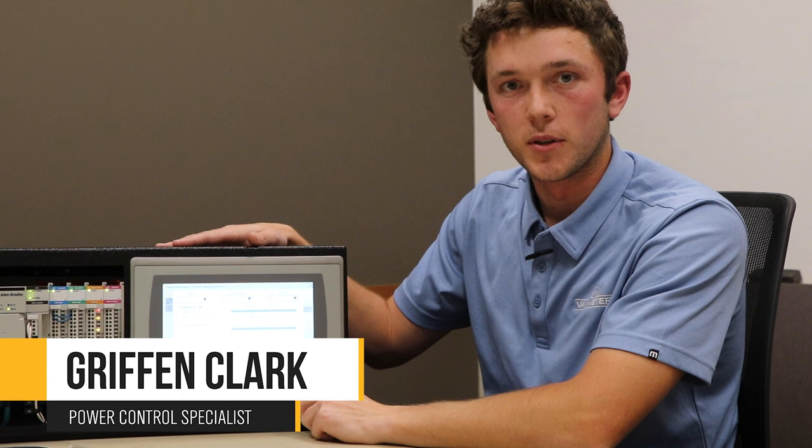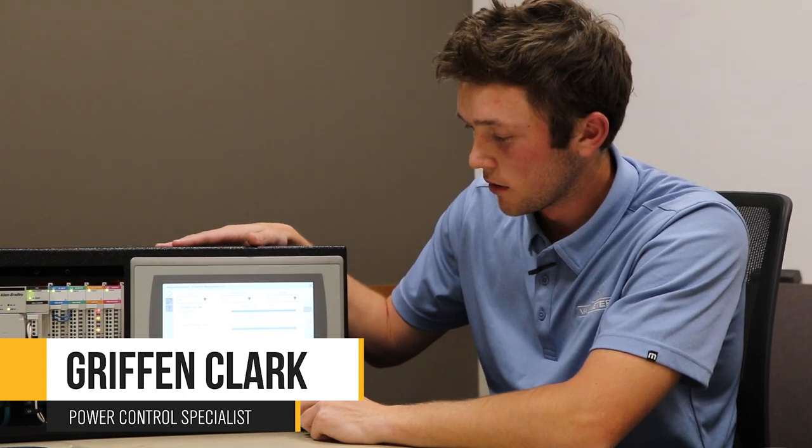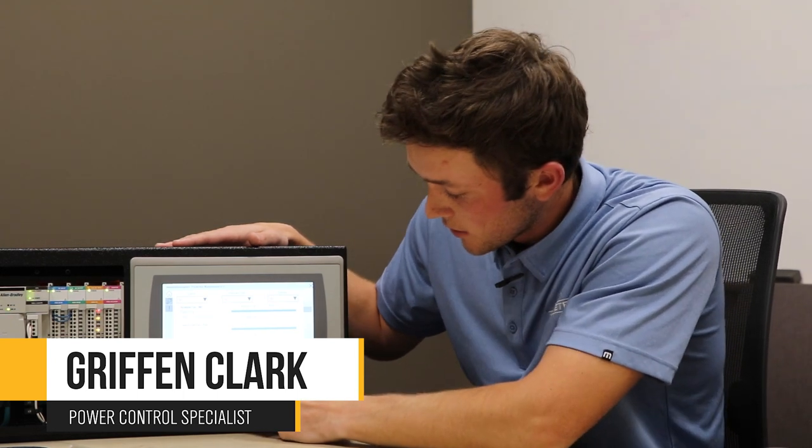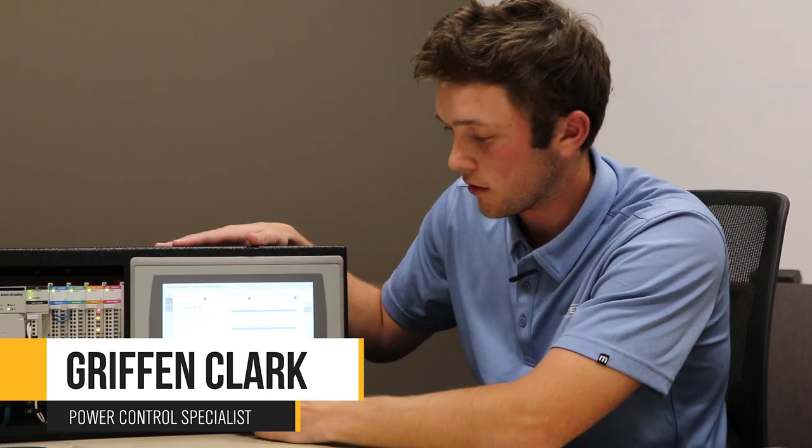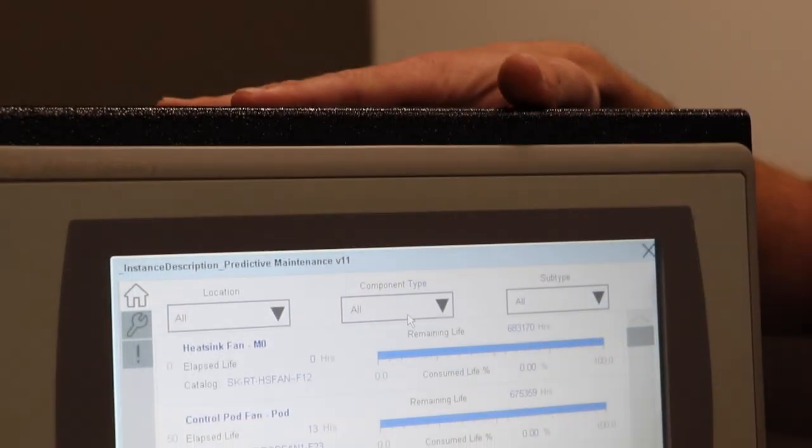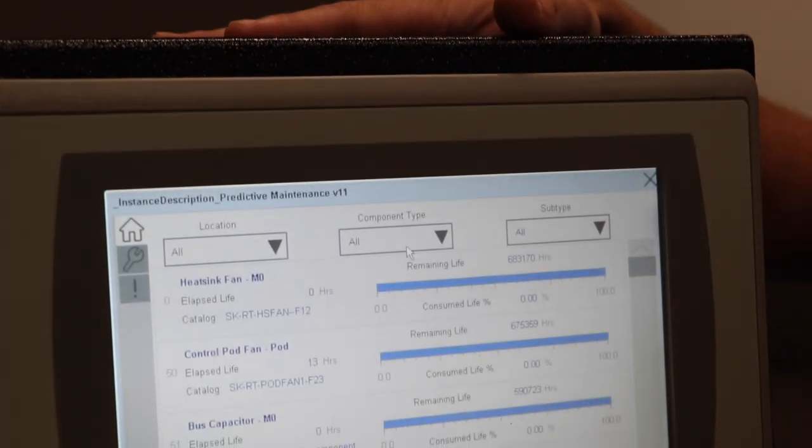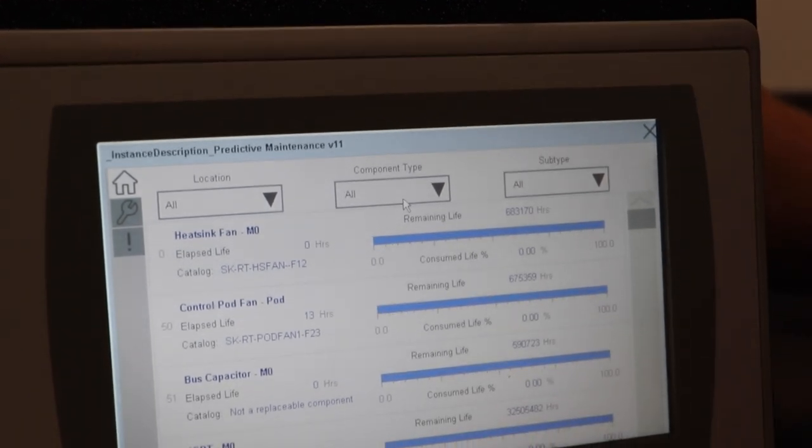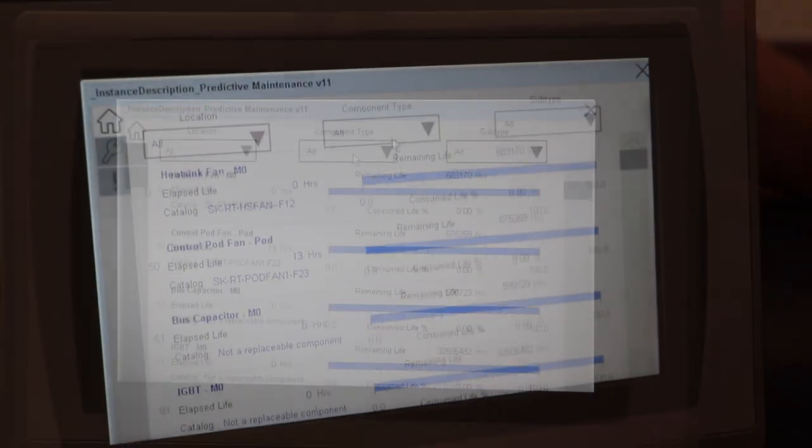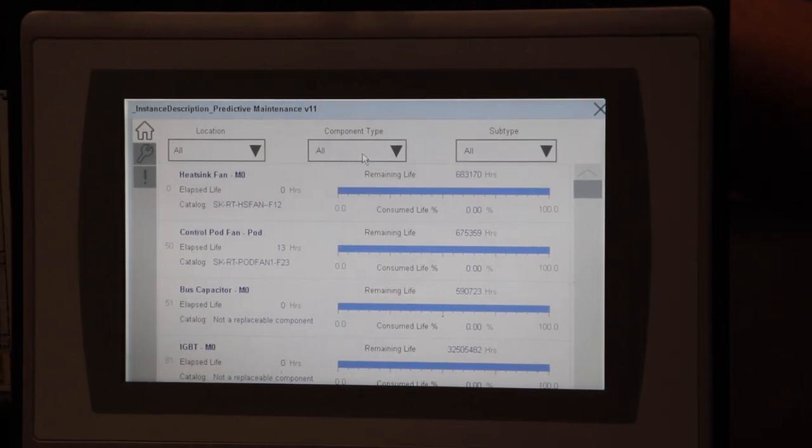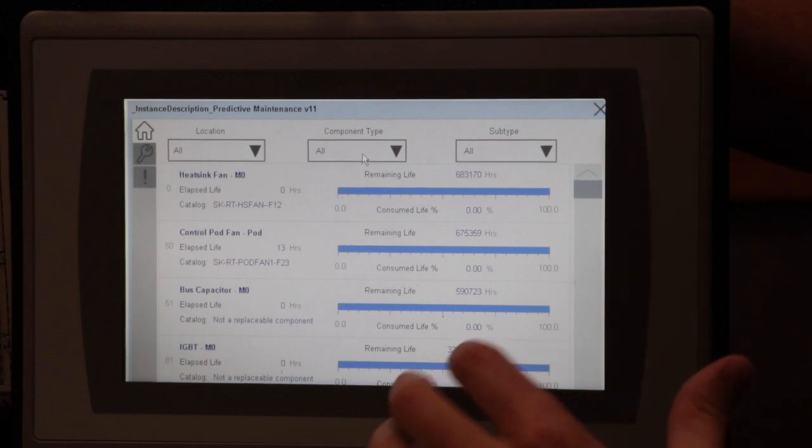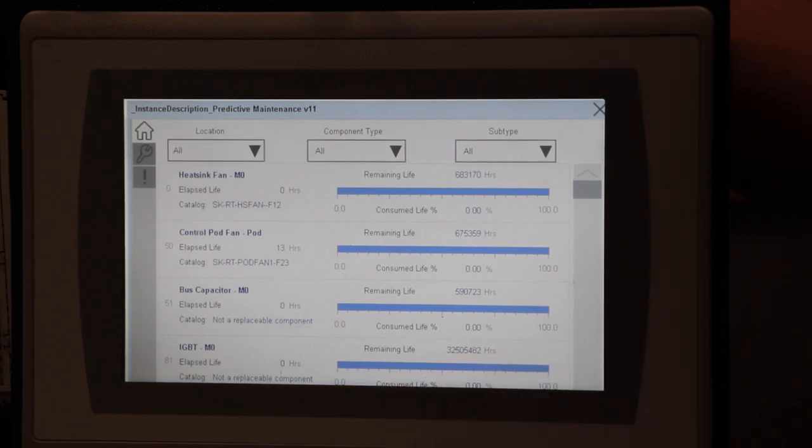If we dive a little deeper here into our panel view we see that we can track the life cycle of these four components by this blue bar which tracks the percentage of life that each component has left as well as by hours of runtime and in that way we can be proactive with our maintenance and reduce downtime.